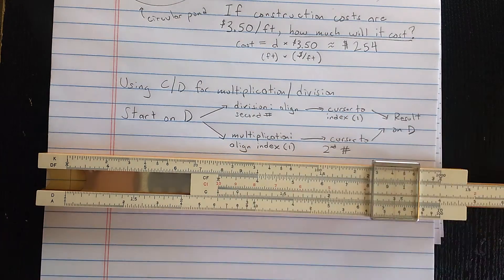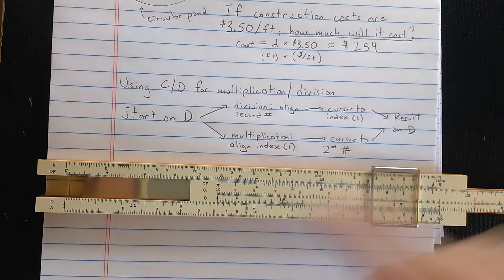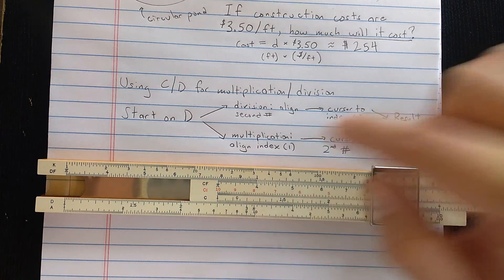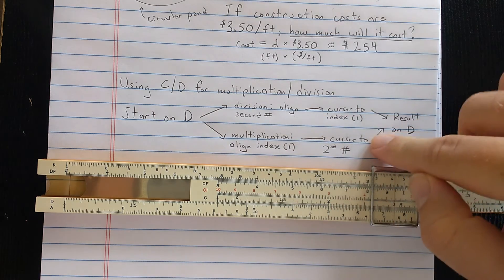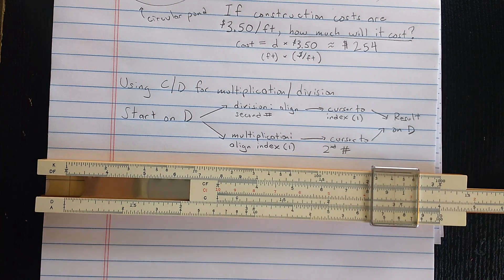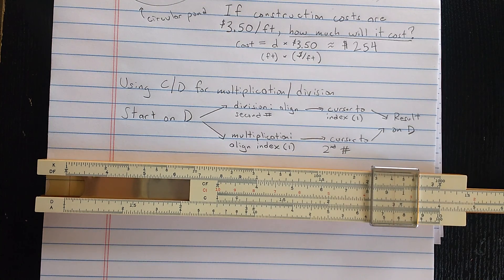Okay. So using this technique, I always start on the D scale. I either align the second number or the index of the C scale with it. Then I find the other one with the cursor. Then I read the result on the D scale. Have fun with your slide rule. Thank you.